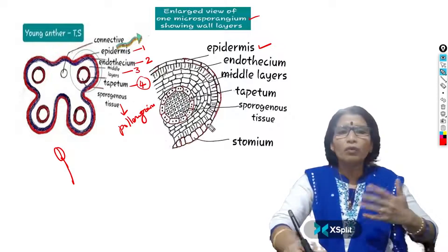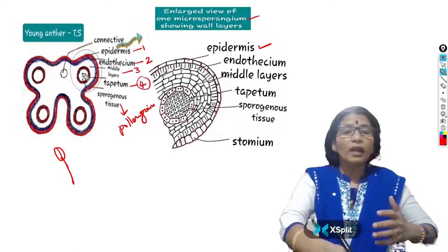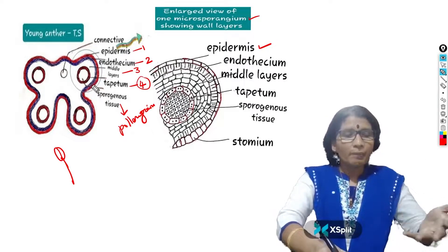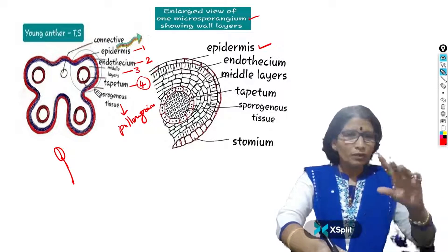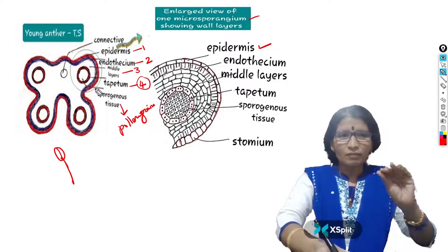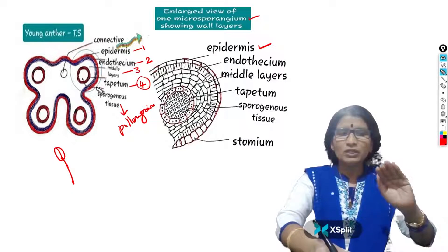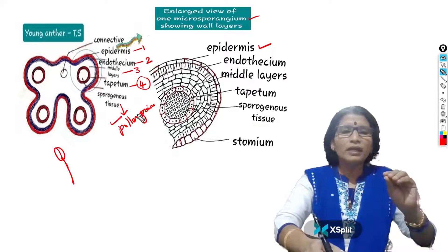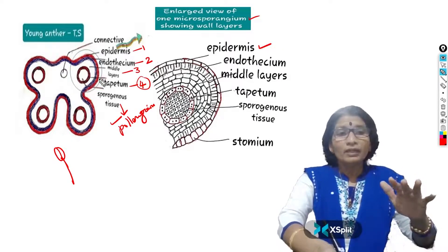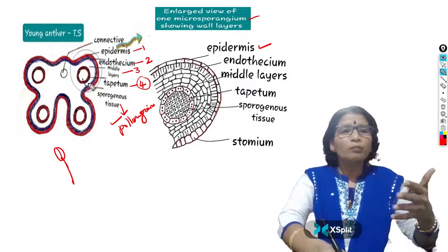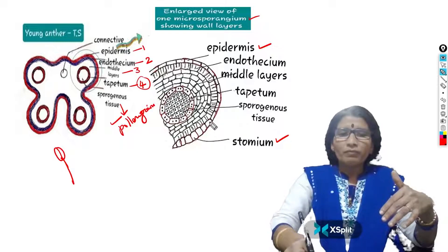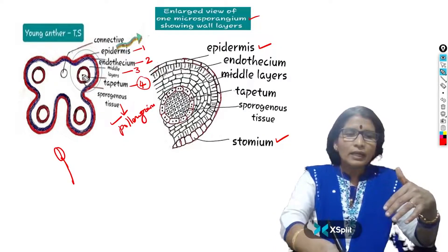Anther dehiscence means breaking of the anther. Whenever the pollen grains inside the anther are completely developed, anther dehiscence occurs — the anther breaks and liberates pollen grains. When you touch any flower, a powder-like structure sticks to you; that powder-like structure is nothing but pollen grains. These pollen grains are produced inside the anther. At the time of dehiscence — the breaking of the anther — the stomium helps.